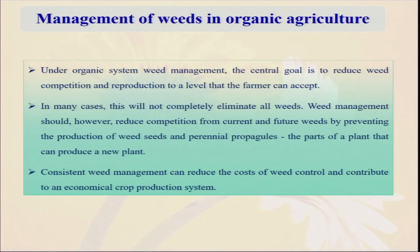So how can we control the weeds in our organic agriculture when we cannot apply any herbicide? Under organic weed management the central goal is to reduce weed competition and reproduction to a level that the farmer can accept. You cannot eradicate the weed — there is a proverb: one year seeding is seven years' weeding. Weed seeds will remain in your soil for seven years, but one single plant of weed can produce lakhs and lakhs of seeds and all the seeds will not germinate in the first year — some come in the first year, some in the second year, third, fourth, sixth, seventh. So if the weed has produced their seeds, you have to continuously do weeding for minimum seven or ten years. This is the difficulty of weed management practices.